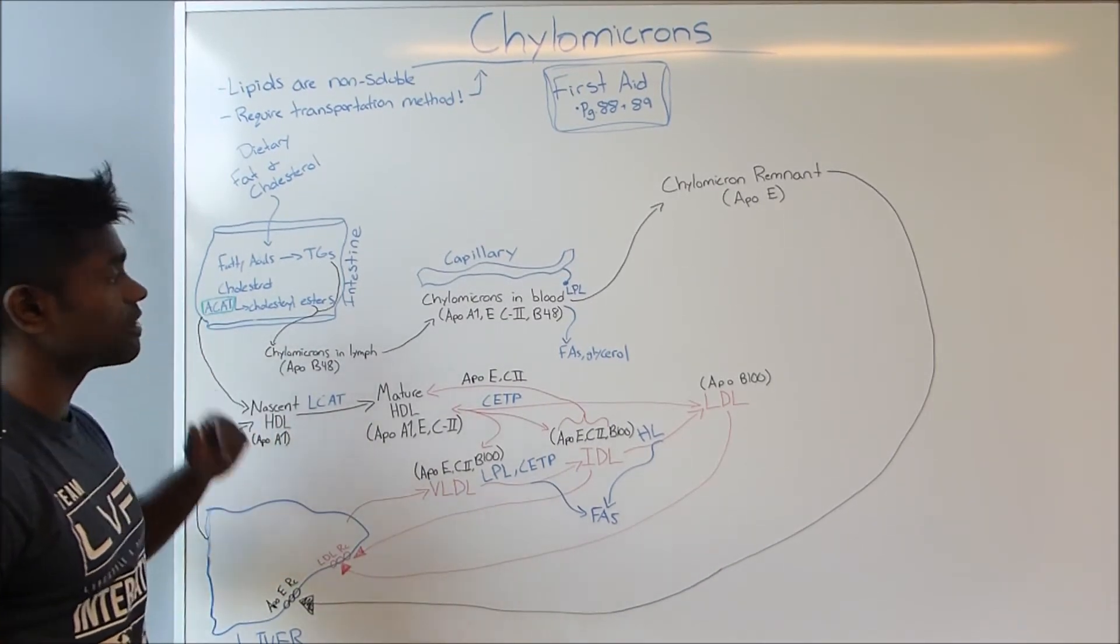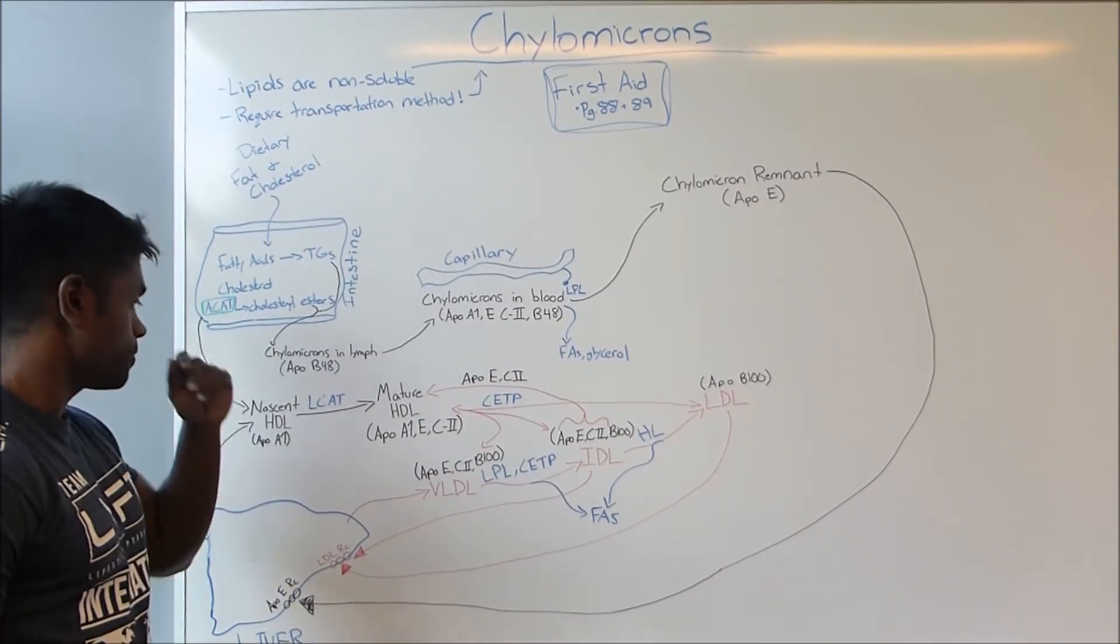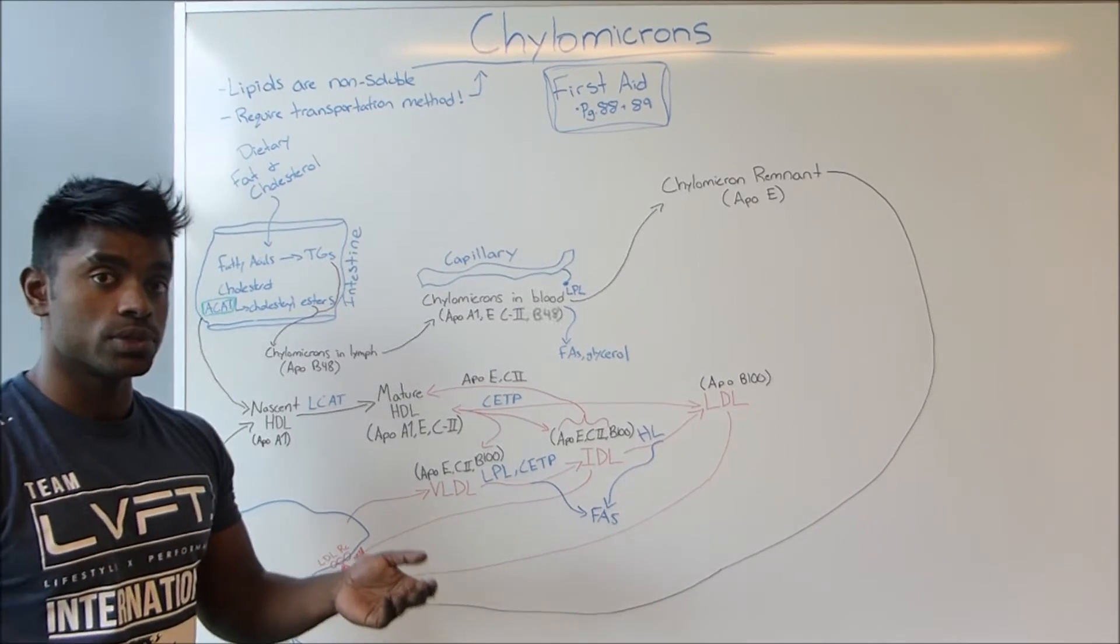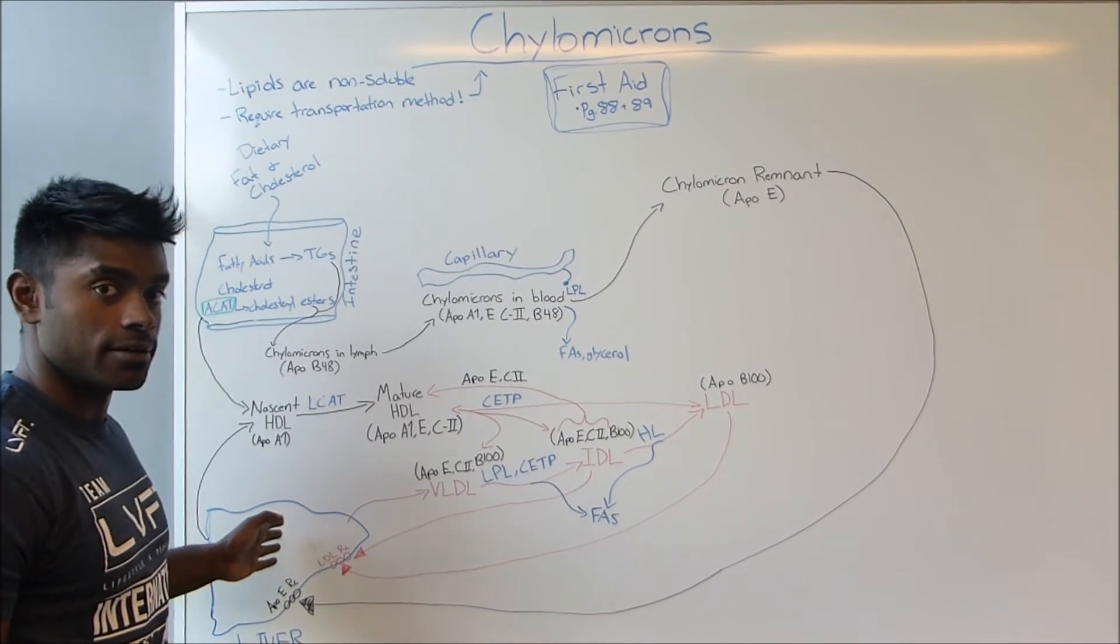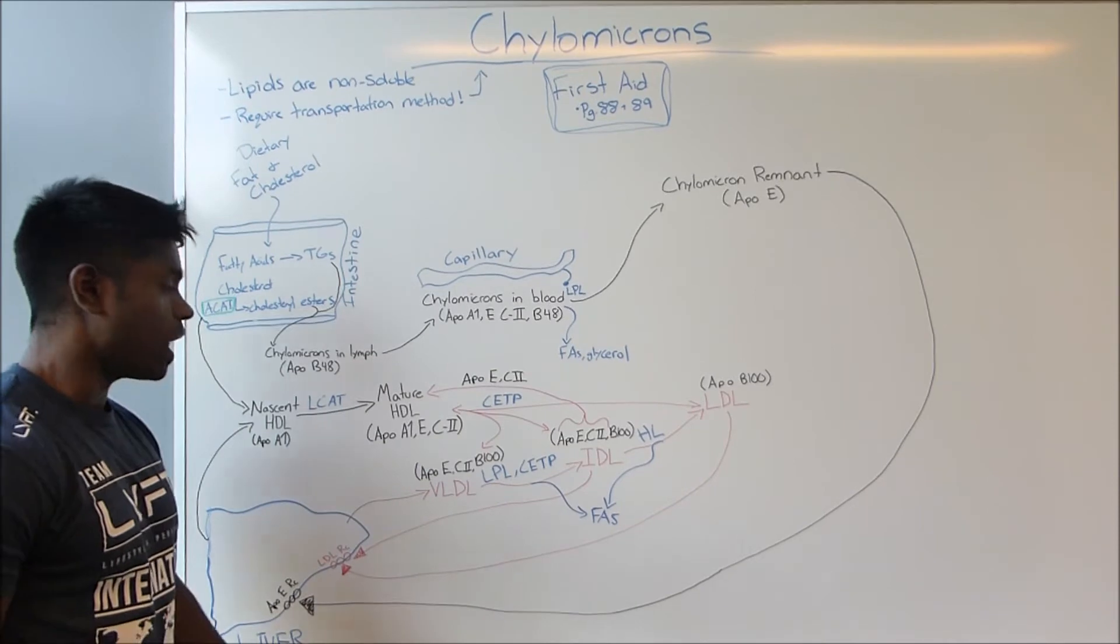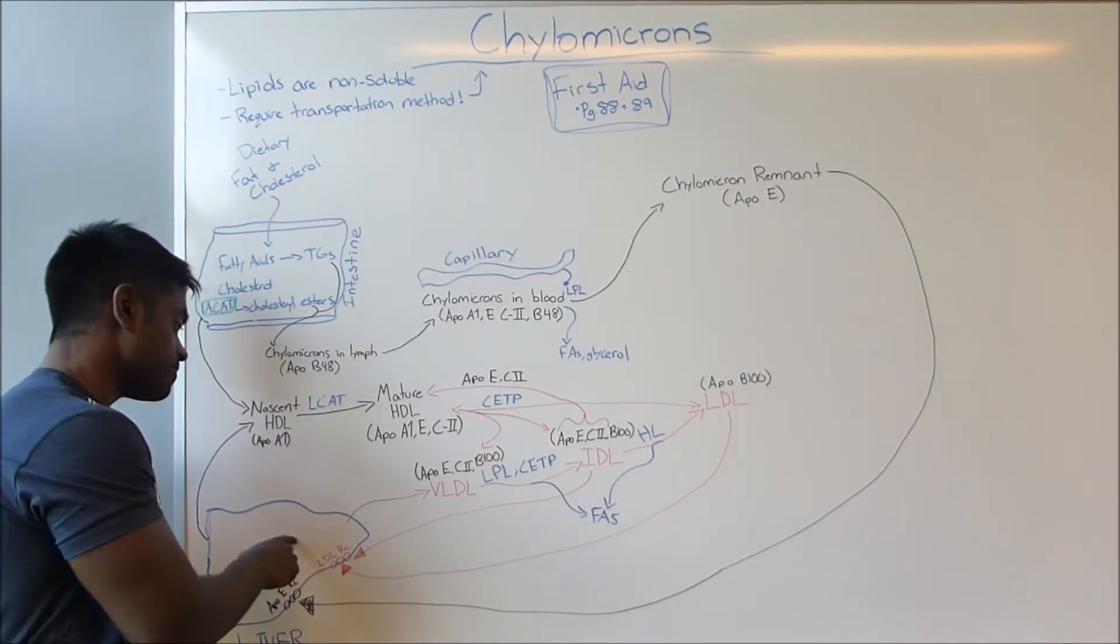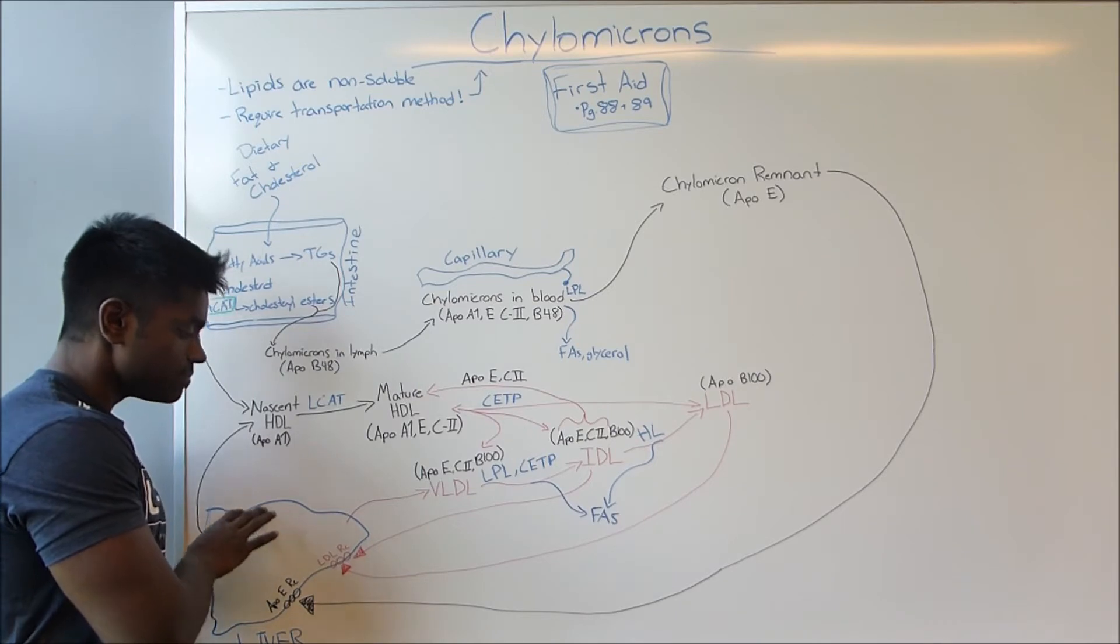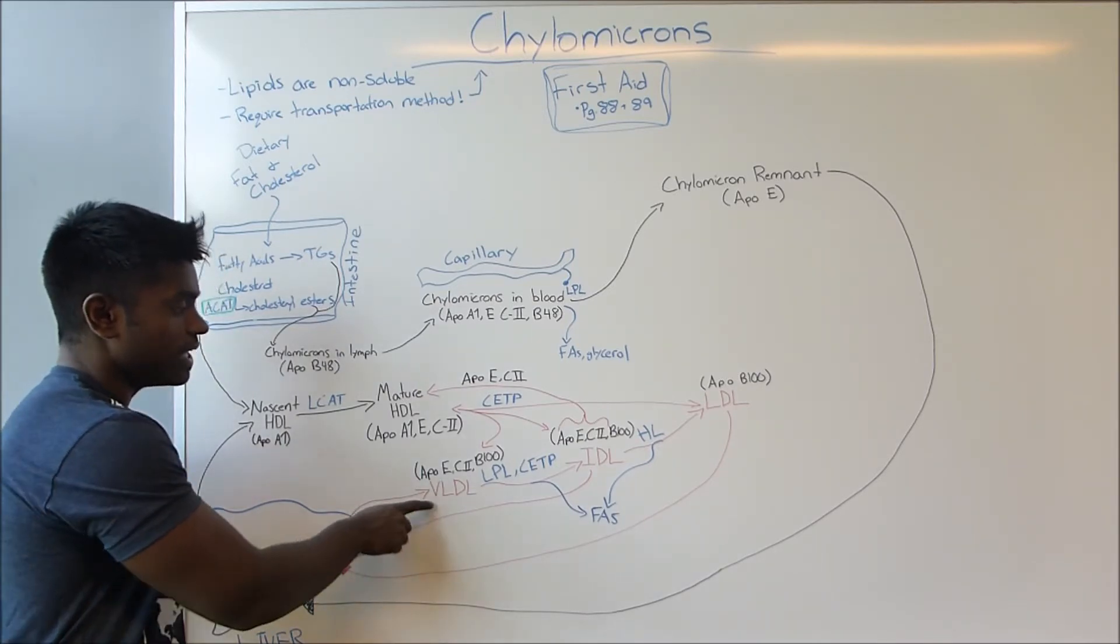So chylomicrons are important for fuel utilization and storage of dietary fatty acids. But what if we want to know how exactly we can use our hepatic fats for fuel utilization and storage? What the body does is the liver actually will release triglycerides in the form of VLDL.